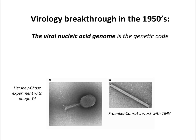In the 1950s, the breakthrough in virology was the demonstration that the nucleic acid of the virus is the genetic code. Even though this sounds obvious today, it wasn't back then. People thought that the proteins might be the important parts because they were so much more complicated. Nucleic acids were simple — they only had four different chemicals in them. And this conclusion came from, initially, two kinds of studies.